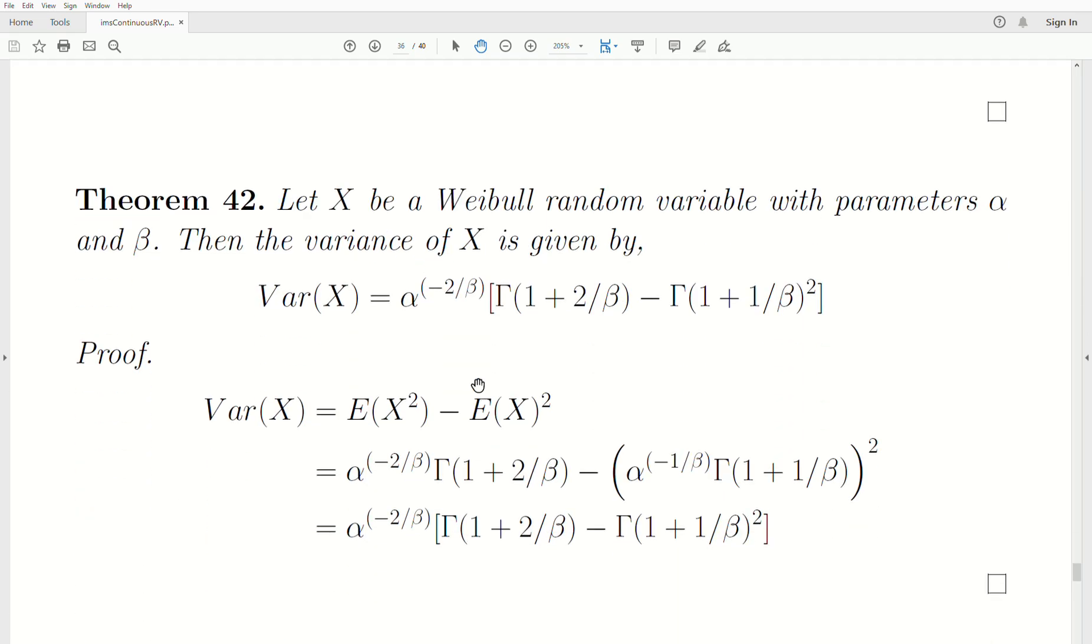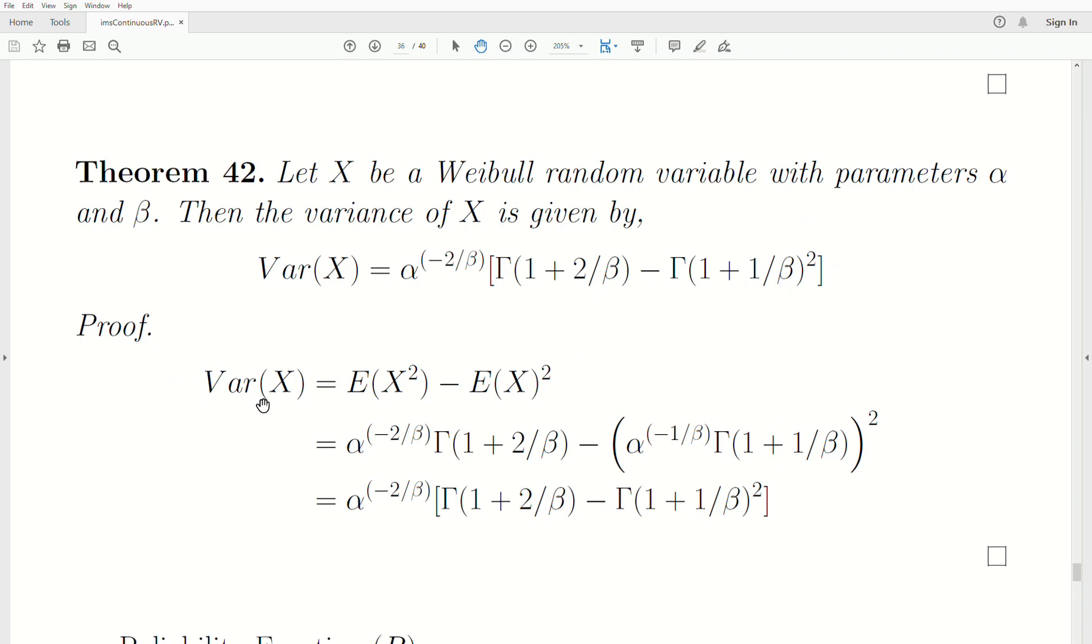Theorem 42: Let X be a Weibull random variable with parameters alpha and beta. The variance of X is given by this expression. To prove it, the variance of X is equal to the expected value of X squared minus the mean quantity squared. You just plug in the values that we just derived, square that and then factor it out of that expression. This is the variance of the Weibull distribution.